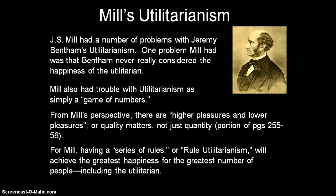For Mill, having a series of rules — what can be called rule utilitarianism — will achieve the greatest happiness for the greatest number of people, including the utilitarian. The notion is that if we have a series of rules, everybody will be factored in, including the utilitarian himself or herself. Because he or she is part of the rule, his or her personal happiness is not, in theory, going to be sacrificed.